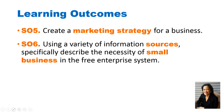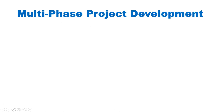Here are the learning outcomes articulated in your syllabus. Student Outcome Number Five is to create a marketing strategy for a business — that's really the core outcome of this project, and the vehicle is the secret shopper activity. Student Outcome Number Six involves using a variety of information sources to describe the necessity of small business in the free enterprise system.